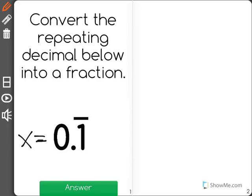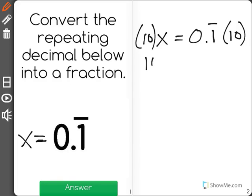So what I'm going to do to start is multiply both sides, this x and 0.1 repeating, times 10. When I multiply both, I end up with 10x equals 1.1 repeating.